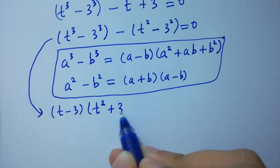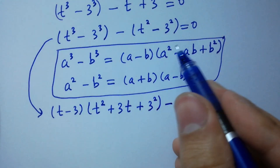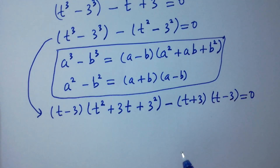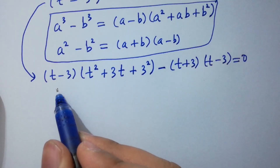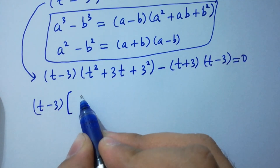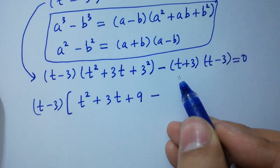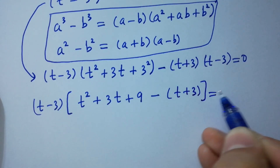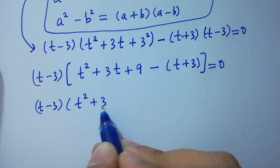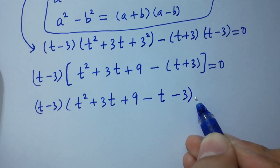Expanding and grouping: plus 3t plus 3 square minus t square minus 3 square gives t plus 3 times t minus 3 equal to 0. Here t minus 3 and t minus 3 can be common. So factoring out t minus 3, we have t square plus 3t plus 3 square — which is 9 — minus t plus 3 equal to 0.